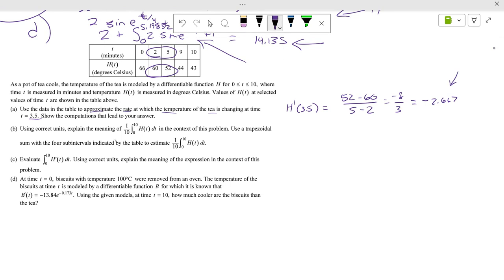Using the correct units, explain the meaning of this in the context of the problem. Use trapezoidal sums with four subintervals indicated in the table. It's talking about this. This is the average value of the temperature. You would say that's the average value of the temperature from time equals zero to time equals 10. That's worth one point.